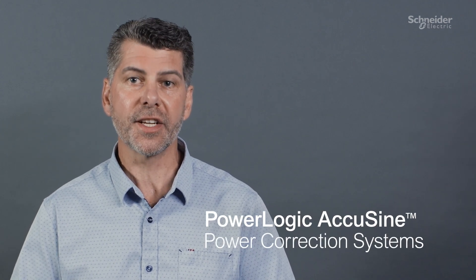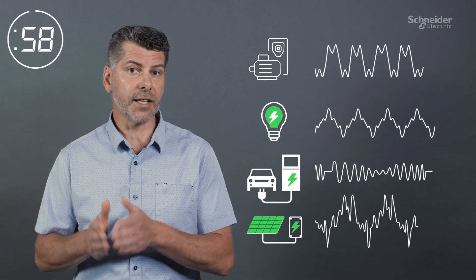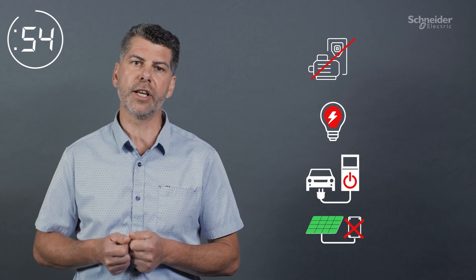I'm going to tell you about PowerLogic AccuSign Power Correction Systems in 60 seconds. Variable speed drives, LED lighting, EV chargers, solar inverters, all generate harmonics,